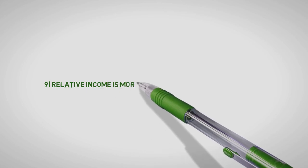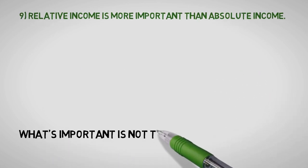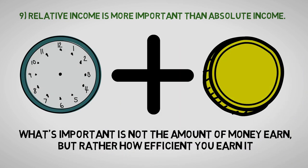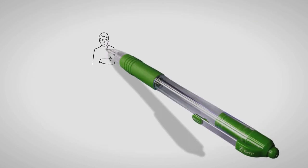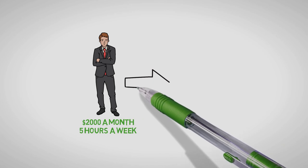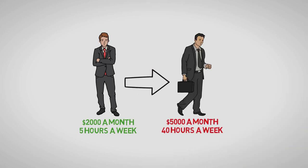Relative income is more important than absolute income. What is important is not the amount of money you earn, but rather how efficiently you earn it. You have to measure both time and money. For example, someone who earns $2,000 a month working 5 hours a week is a lot richer than someone who is earning $5,000 a month working 40 hours a week.